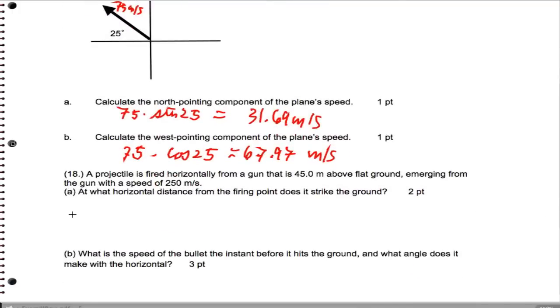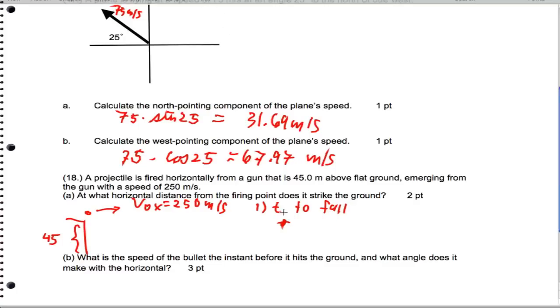We have a projectile fired horizontally from a gun that's 45 meters above flat ground. We want to know the horizontal distance from the firing point when the bullet strikes the ground. This ends up being a repeat of one of the problems we've done before. We've got a bullet going this way with v naught x of 250 meters per second, and we're 45 meters above the ground. Let's first get the time to fall. We land at zero, and that equals negative one-half times 9.8 times t squared plus 0 plus 45. When we do this math, the time is about equal to 3 seconds.